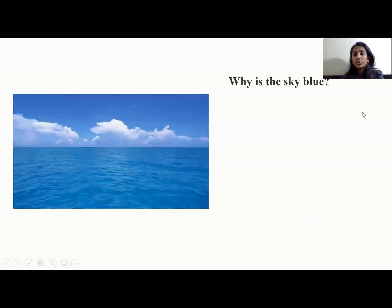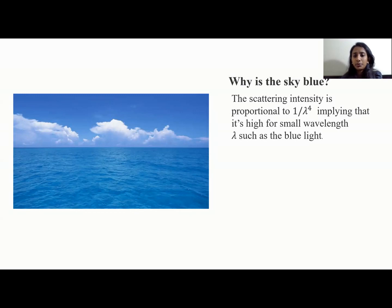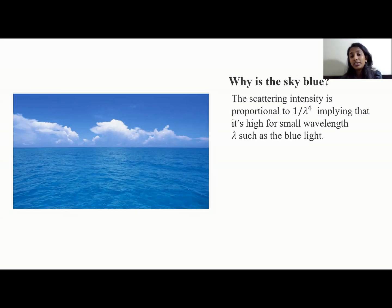Now, before we go into what the Raman effect is, one of the main questions that prevailed in the 19th century was: why is the sky blue? A British scientist known as Lord Rayleigh came up with the Rayleigh Scattering Theory, in which he rigorously proved that the scattering intensity of light by an atom or molecule is inversely proportional to the fourth power of wavelength, implying that for smaller wavelengths such as blue light, the scattered intensity is really high, overpowering other colored lights. That is the reason why we see the sky as blue.